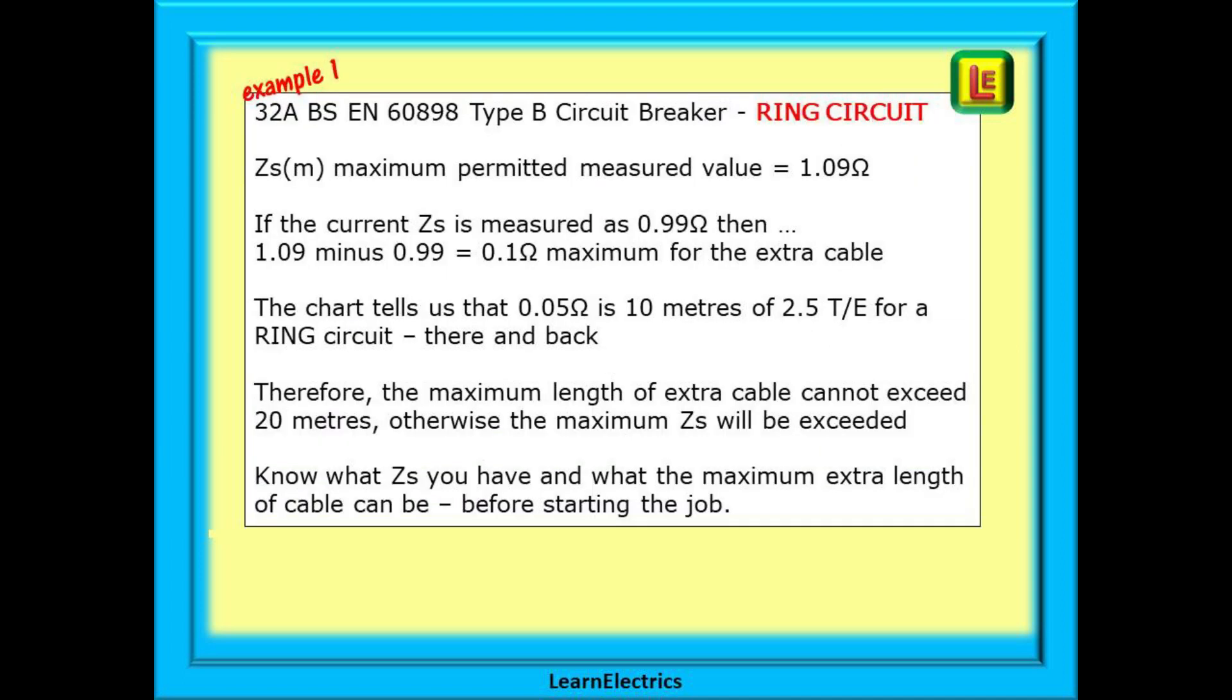In this first example we have a 32 amp BS EN 60898 type B circuit breaker protecting a ring circuit. The ZSM or maximum permitted measured value is 1.09 ohms. If the actual ZS is measured at 0.99 ohms then 1.09 minus 0.99 gives us 0.1 ohms maximum for the extra cable. Looking at the chart it tells us that 0.05 ohms is 10 meters of 2.5 millimeter twin and earth cable for a ring circuit. 2 times 0.05 is 0.1 so 2 times 10 meters is 20 meters. Therefore the maximum length of extra cable cannot exceed 20 meters otherwise the maximum ZS will be exceeded. Know what ZS you have and what the maximum extra length of cable can be before starting the job.